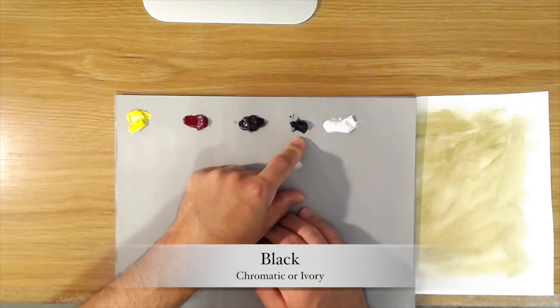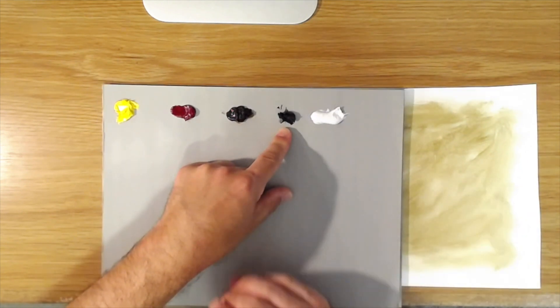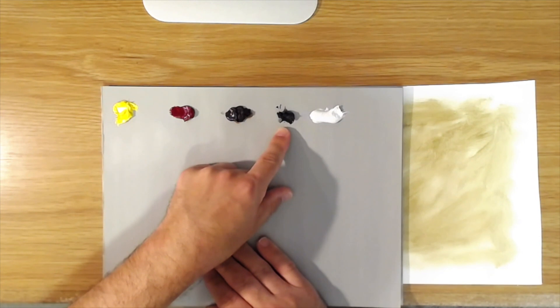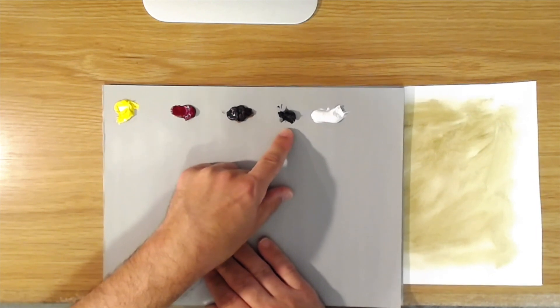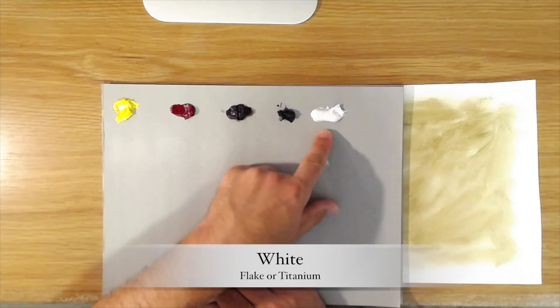Then I have the chromatic black that I use, and you could also use ivory black. Just be aware that ivory black is a little cooler, so it might make your mixtures look a little different, but it should work fine. And white, of course.